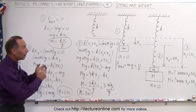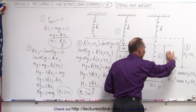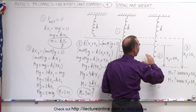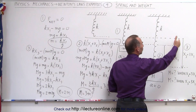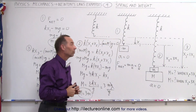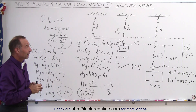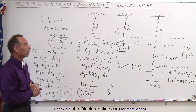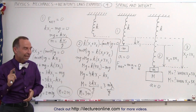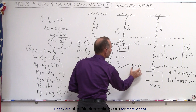So depending upon how the problem is worded — if they say the additional mass causes an additional extension that is 3 times the original extension, or if the extra mass causes a total extension of the spring that is 3 times the original extension — you'll get two separate answers. So a lot depends on how exactly the problem is worded. This gives you a very good idea of how to attack such a situation. If the problem is static, the acceleration is zero.